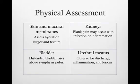Physical assessment of the urinary system includes assessment of the patient's skin and mucosal membranes for hydration, turgor, and texture; assessment of the bladder for distention; assessment of the kidneys for flank pain, infection, or inflammation; as well as assessment of the urethral meatus for discharge, inflammation, or lesions.